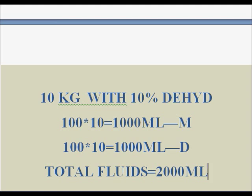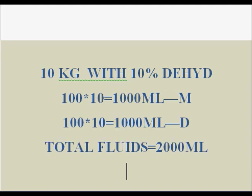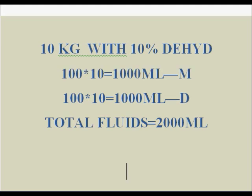For comparison: if it is 5% dehydration, that is 50 ml per kg, so 50 ml multiplied by 10 kg equals 500 ml deficit. So the total fluids he should receive within 24 hours would be 1000 ml maintenance plus 500 ml deficit equals 1500 ml. In our 10% example, the total is 2000 ml.